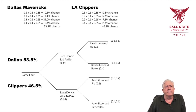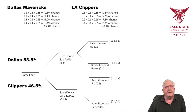The Clippers would be 46.5%, and we could calculate that using those same percentages. We can see Dallas has a slightly better chance of winning, so if we're going to gamble, we might want to gamble on Dallas winning this game. The idea is: if you have these percentages, you can multiply them together and arrive at the percentage chances of winning.